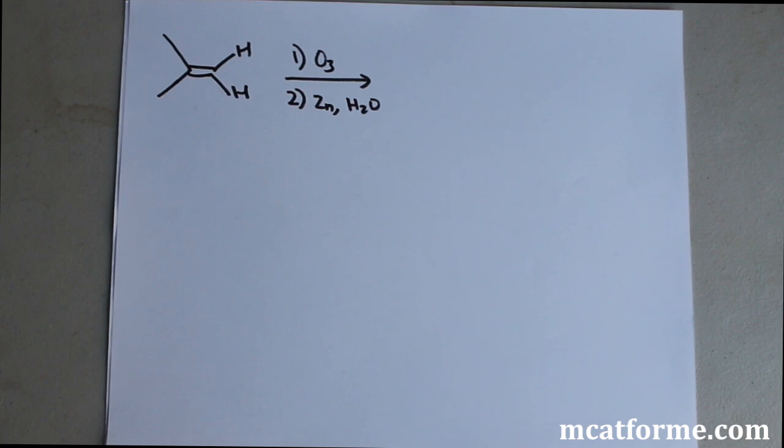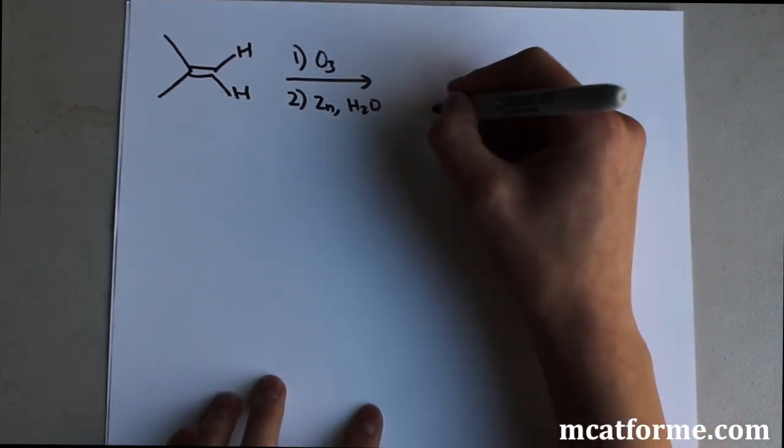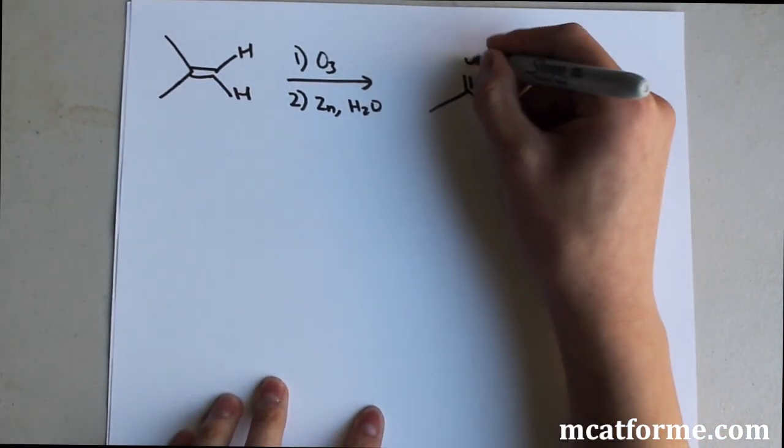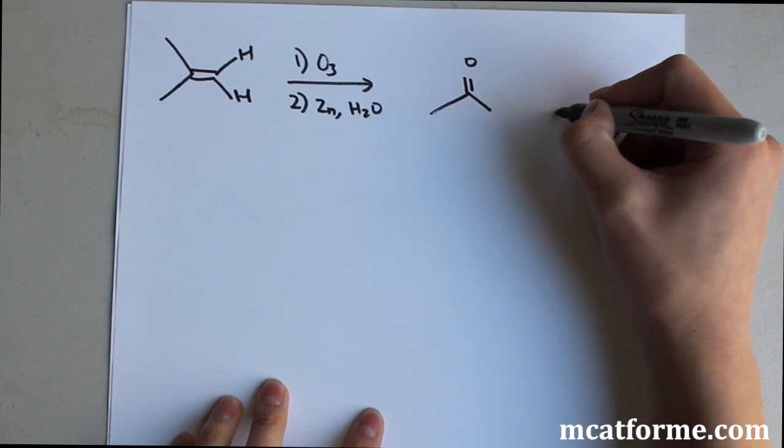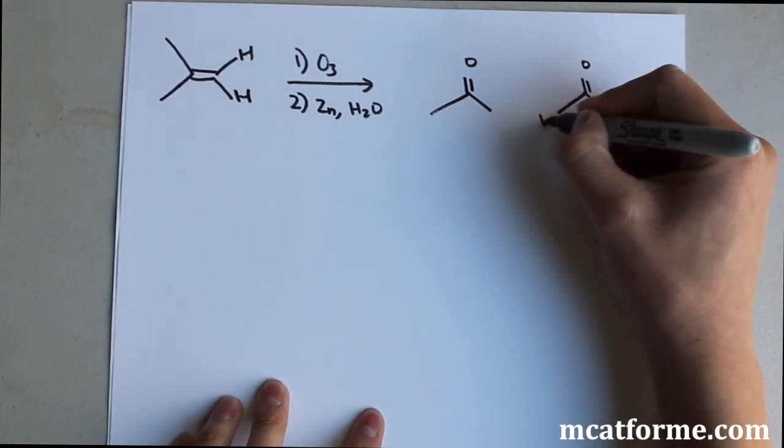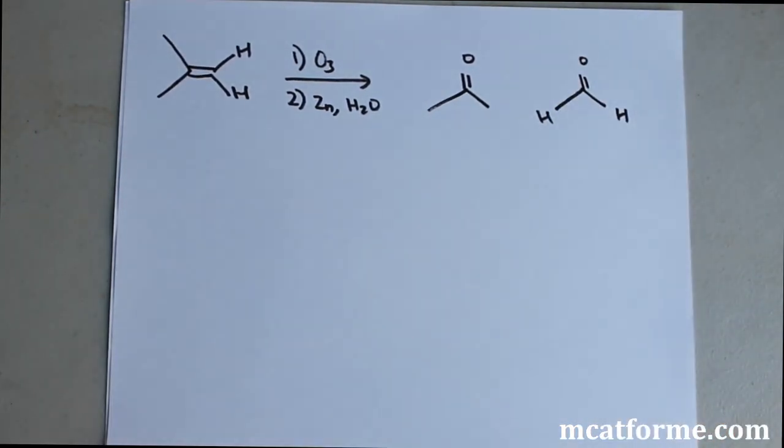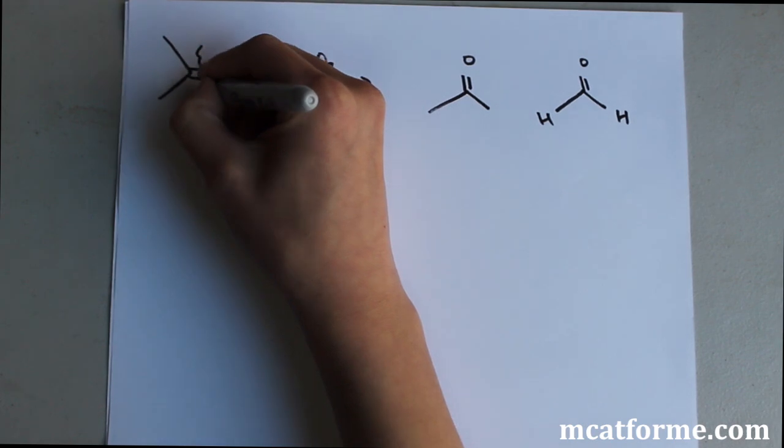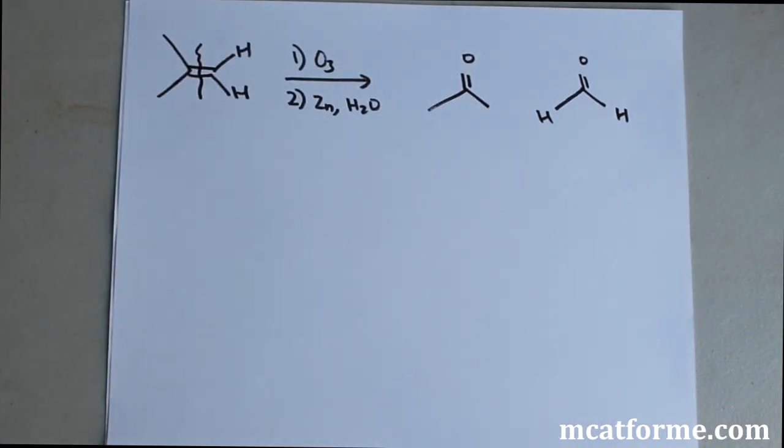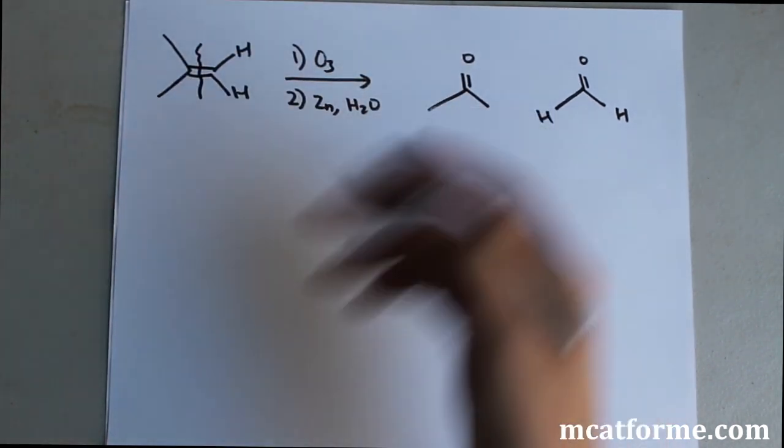The last of the alkene reactions is this ozonolysis reaction. The mechanism is very complex but all we need to know for the MCAT is that it's going to form two carbonyl carbons. It's going to either form ketones, aldehydes, whatever it may be. All it's going to do is split it down the middle, split the alkene down the middle and add two O's.